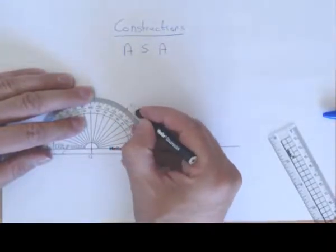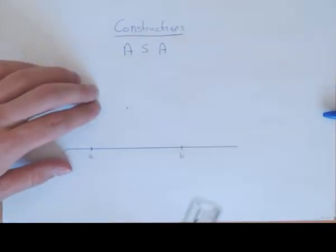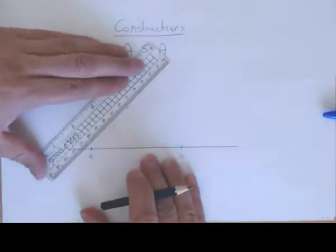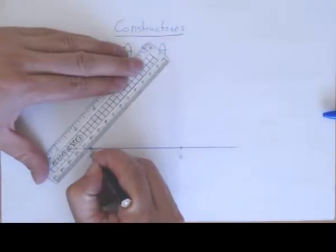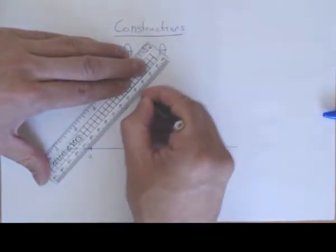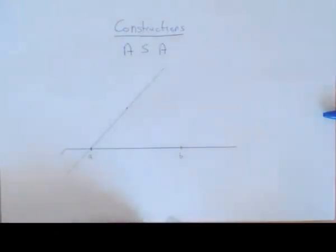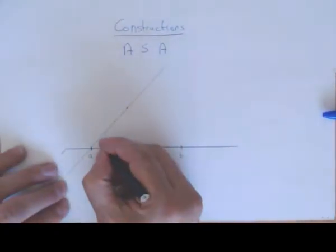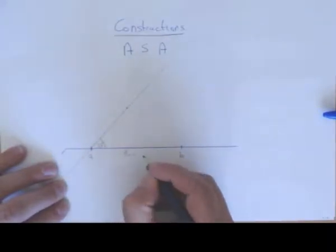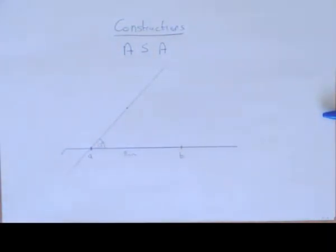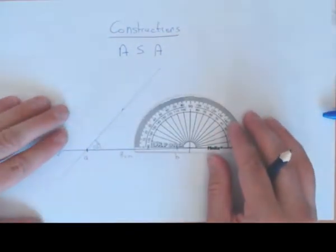Which comes out to 130 here and we measure that point there. To draw the line, we draw it through the two points and out the other side some distance. So that's our angle, 50 degrees. Our line segment, which is exactly eight centimeters long.